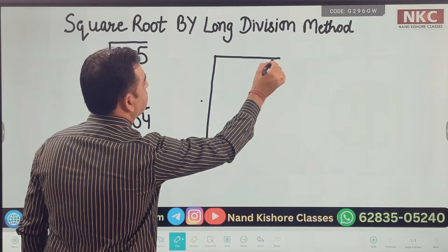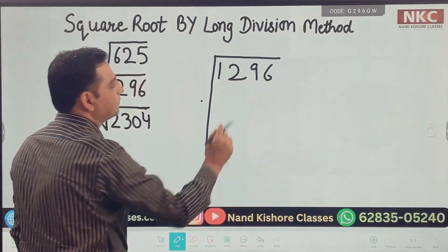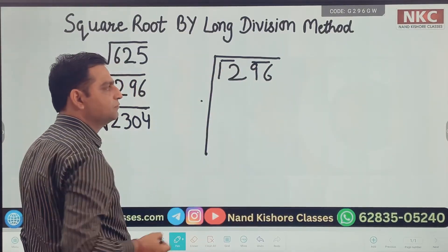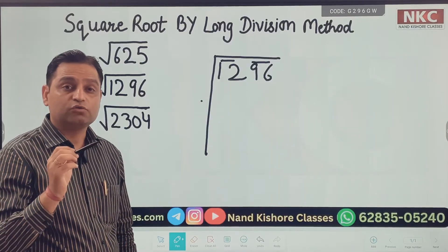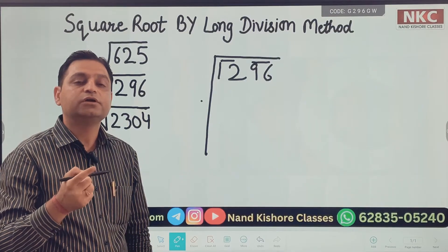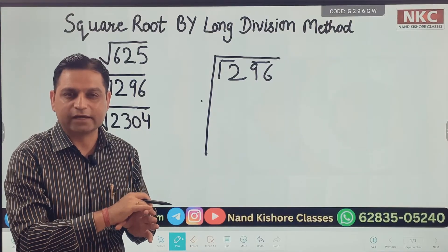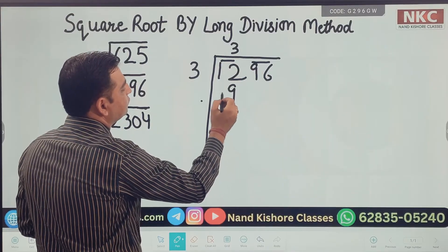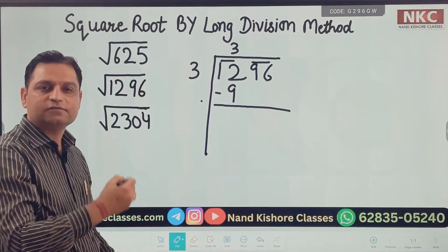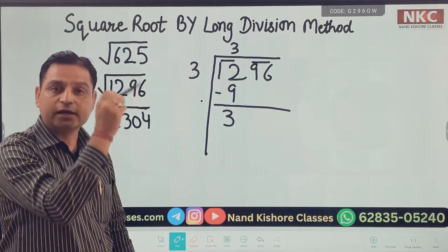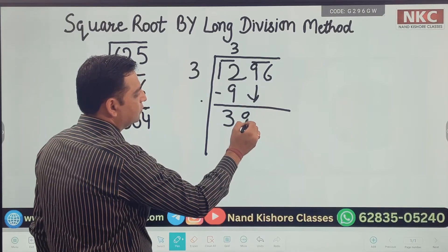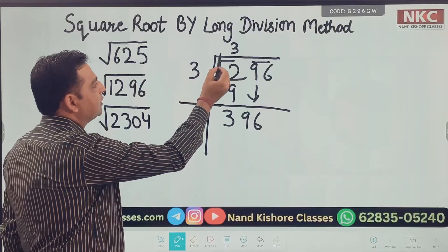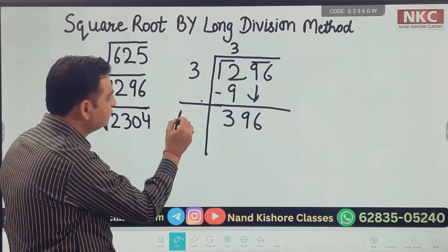1296. Make the pairs: one pair is 96, one pair is 12. Now 12 is not a perfect square. You need to find the perfect square lesser than 12, which is 9. That means 3 multiplied by 3 is 9. 12 minus 9 is 3, and 96 comes down. It is 396 now. The same way we did earlier, 3 plus 3 is 6.